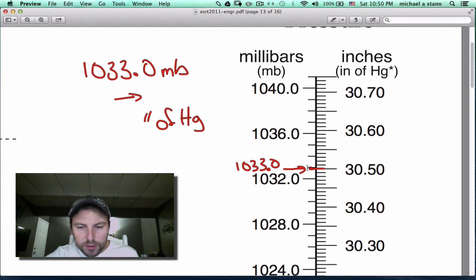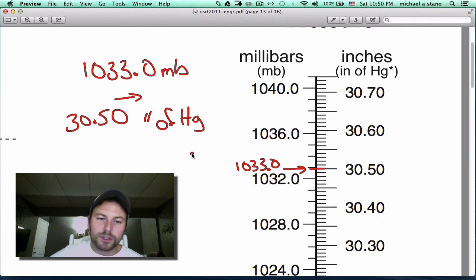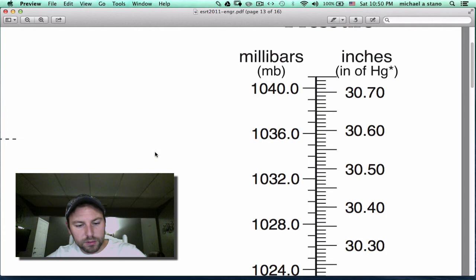And we can see that it almost is on that 30.50 line. And that's it. We call it a day. 30.50 inches of mercury is basically the same as 1033.0 millibars. We can also go the other way.